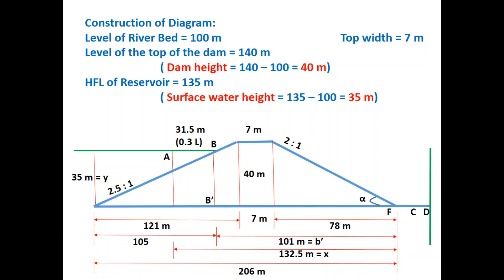Point A on the water surface is the starting point, which is identified by multiplying the surface water length by 0.3. The x-coordinate of A is calculated as 132.5 m and y is 35 m (the water height). By considering these x and y coordinates, the phreatic line — shown as a blue dashed line — can be drawn starting from A to C through J.